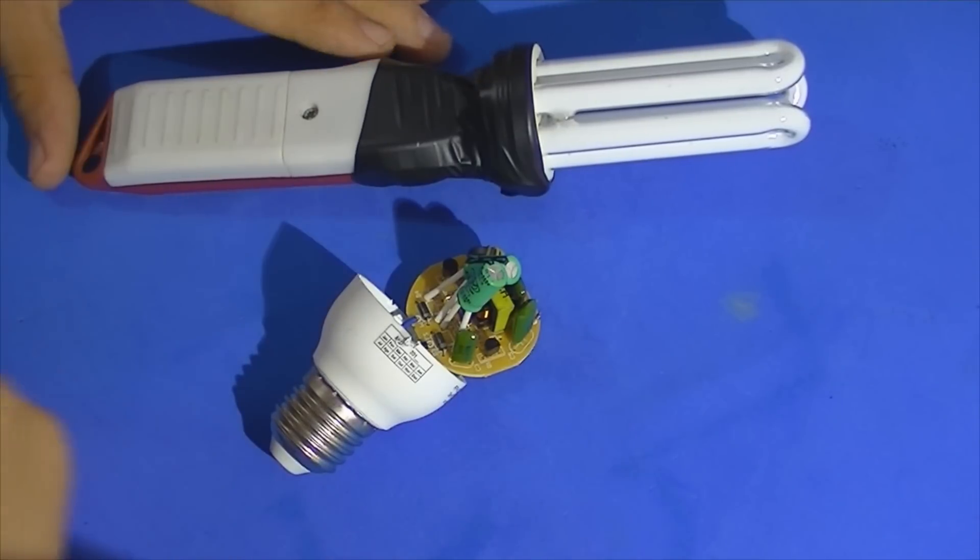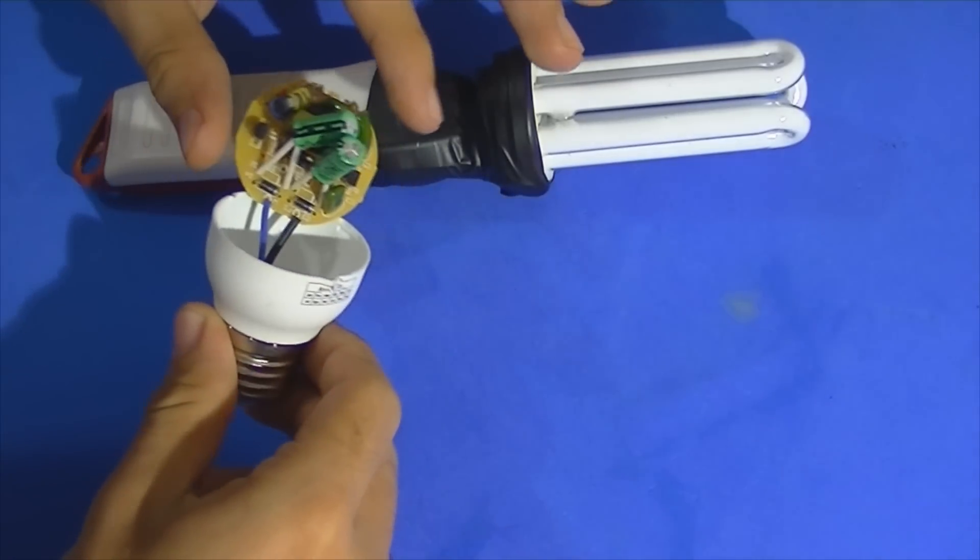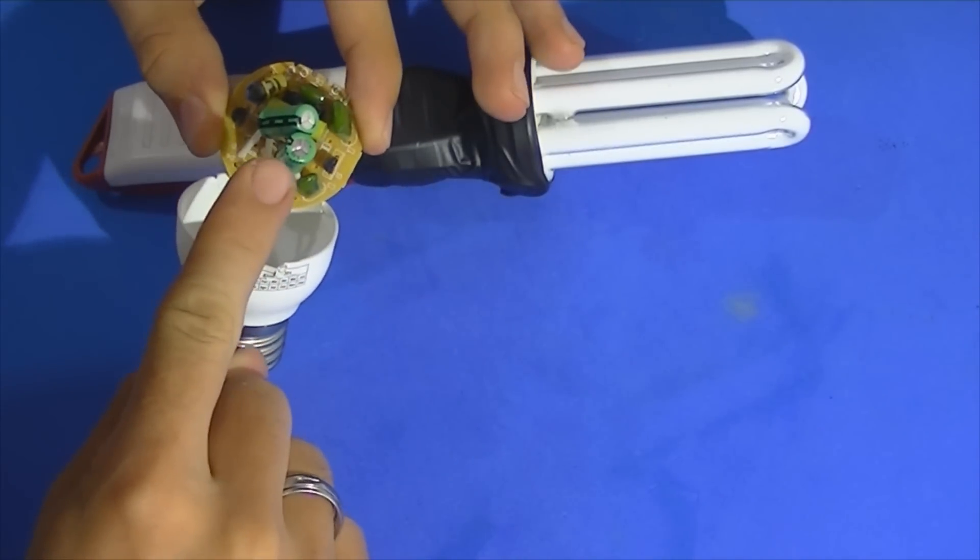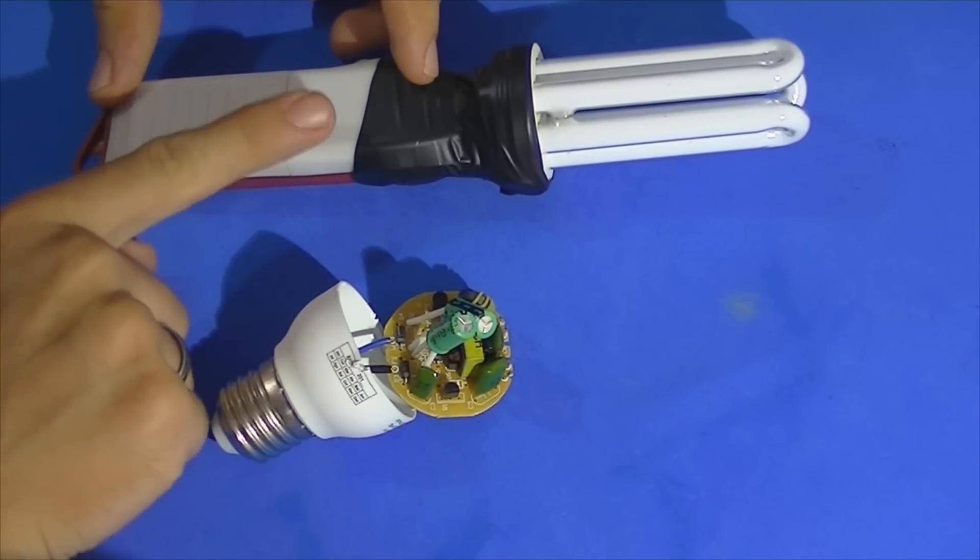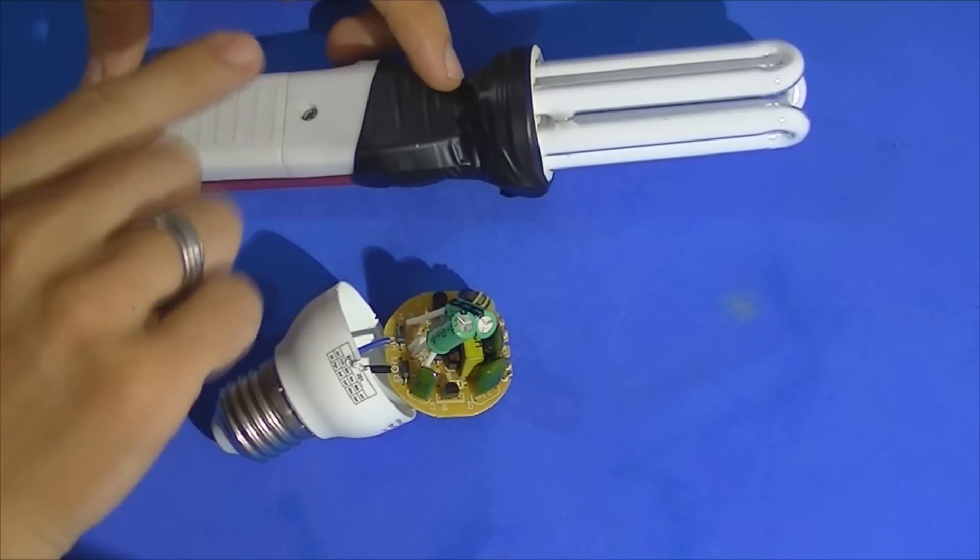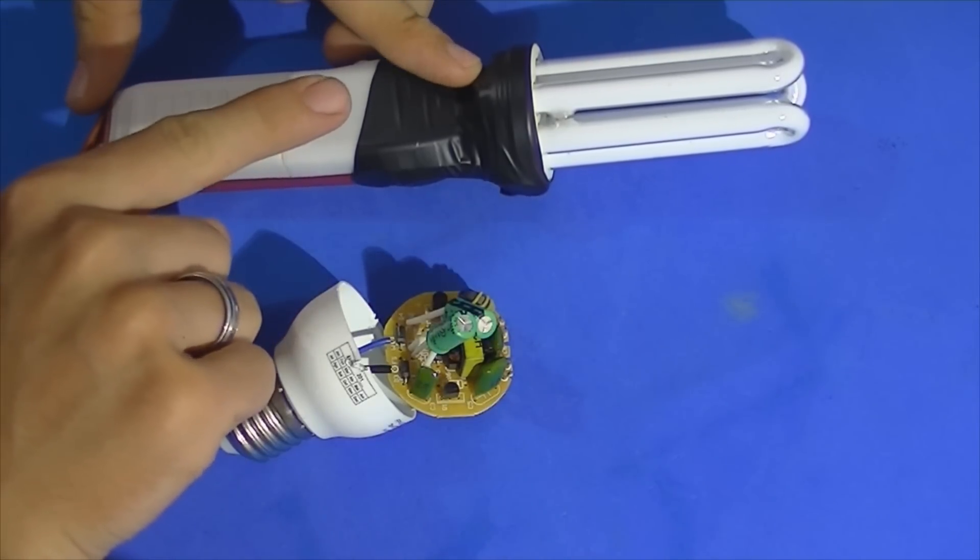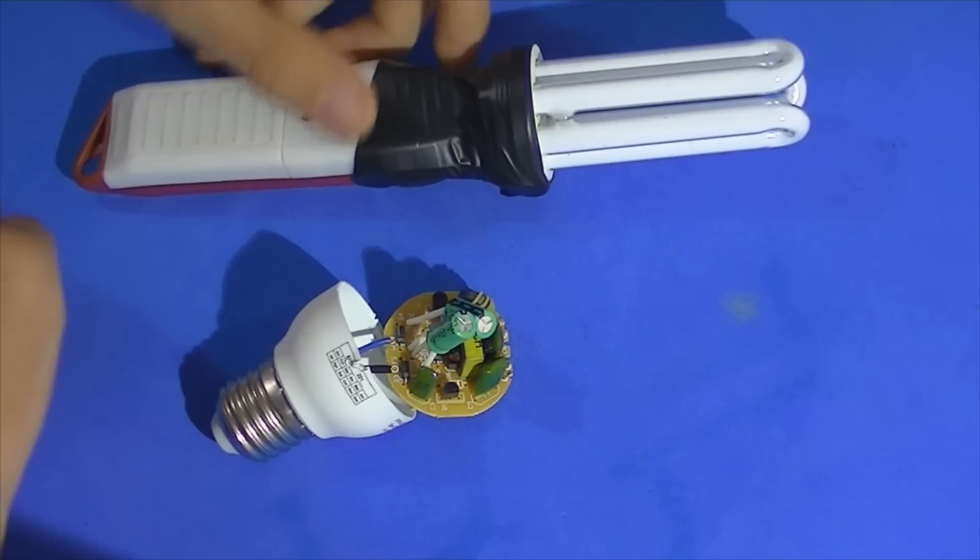E por que a nossa lâmpada acende? Bom, o que estragou nessa lâmpada foi apenas esse circuito eletrônico que tem a função de emitir uma alta frequência. O acendedor elétrico, ele emite uma frequência alta também, uma corrente baixa, mas porém ele manda uma tensão alta, cerca de 150, 200 volts.